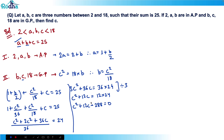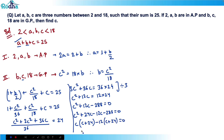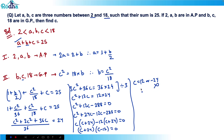Factorising c² + 12c − 288 = 0: since 288 = 24 × 12, we write (c + 24)(c − 12) = 0, giving c = 12 or c = −24. Since a, b, c must lie between 2 and 18, we discard c = −24. Therefore c = 12.